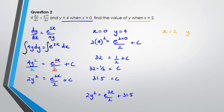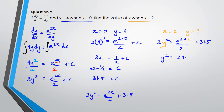Substituting x = 2: 2y² = e^(2×2)/2 + 31.5. You can work this out on the calculator. What you end up getting is y² ≈ 29.4, so y = √29.4 ≈ 5.42. That's question 2 done. I'm going to do two more similar questions.